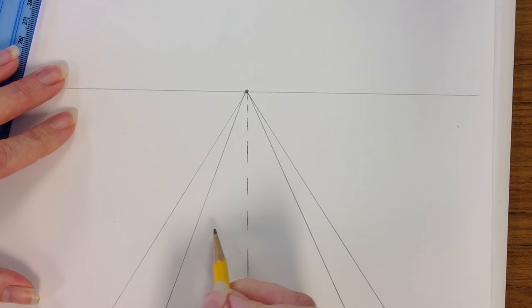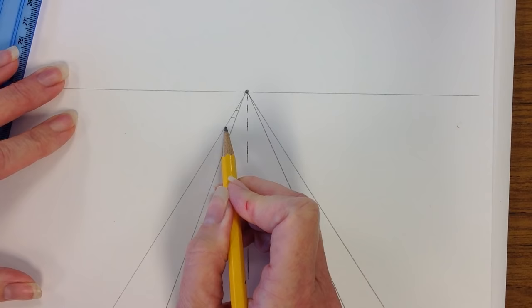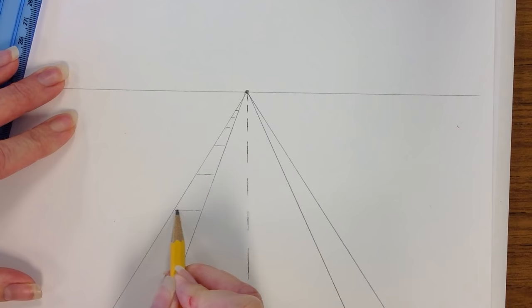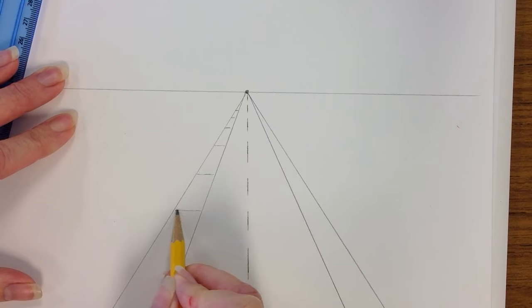On the sidewalk, it has lines that are horizontal going across. I'm going to start in the back and as I come forward, I can space them a little bit farther apart and it will look like it's going back in the distance.